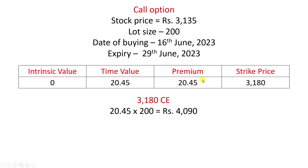The example here is that of Asian Paints stock. Asian Paints stock is trading currently at 3135 rupees and today is 16th June 2023. The spot price of stock as of 16th June 2023 is 3135 rupees. The option of Asian Paints has a lot size of 200. The expiry of options is 29th June 2023.